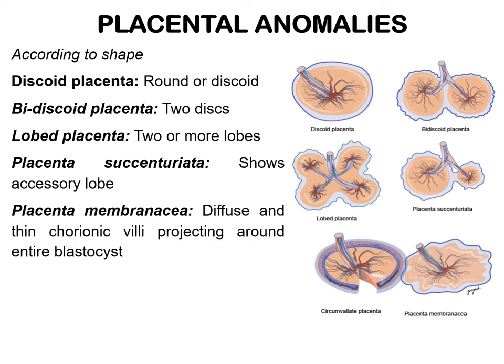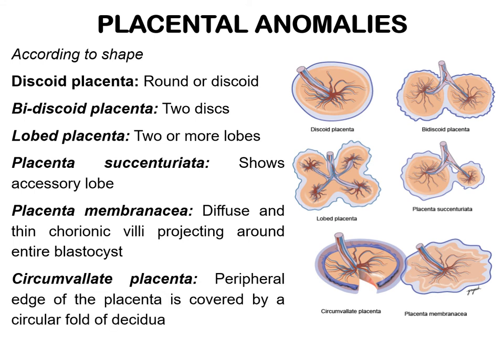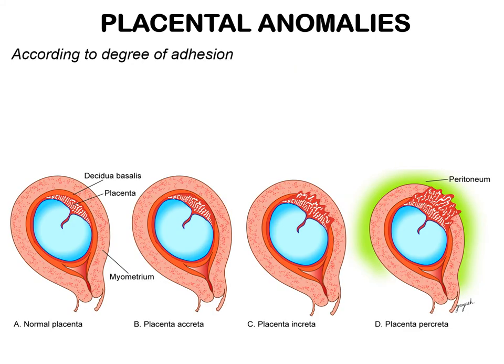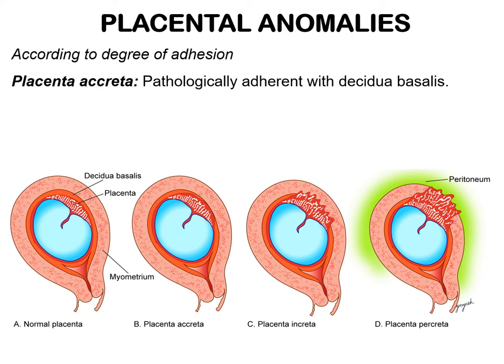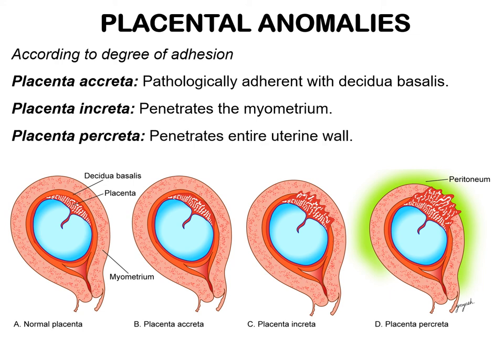If the peripheral edge of the placenta is covered by a circular fold of decidua, it is known as circumvallate placenta. According to the degree of adhesion, placenta accreta is pathologically adherent with the decidua basalis. Placenta increta penetrates the myometrium of the uterine wall, and placenta percreta penetrates the entire uterine wall.